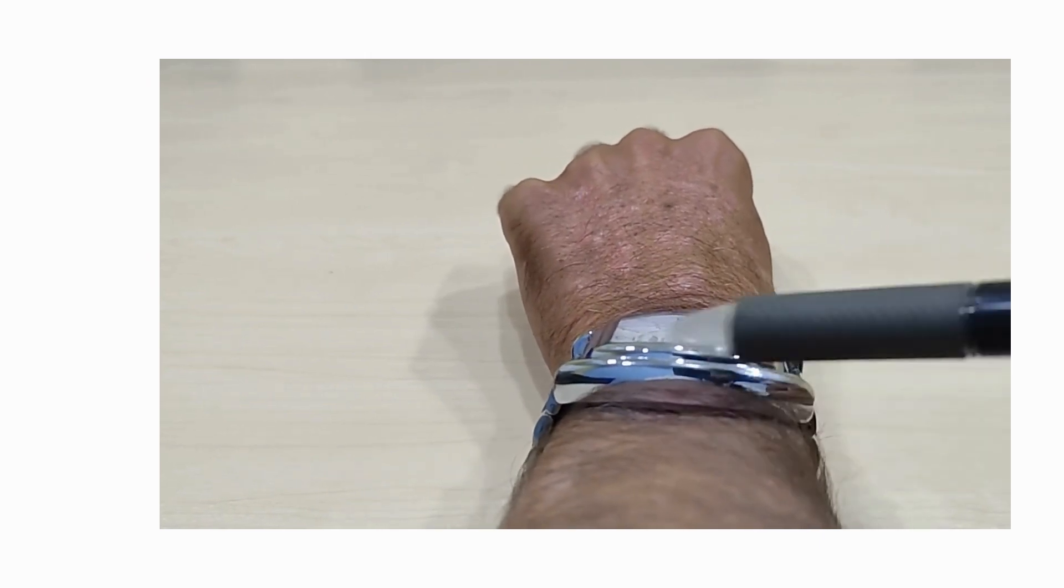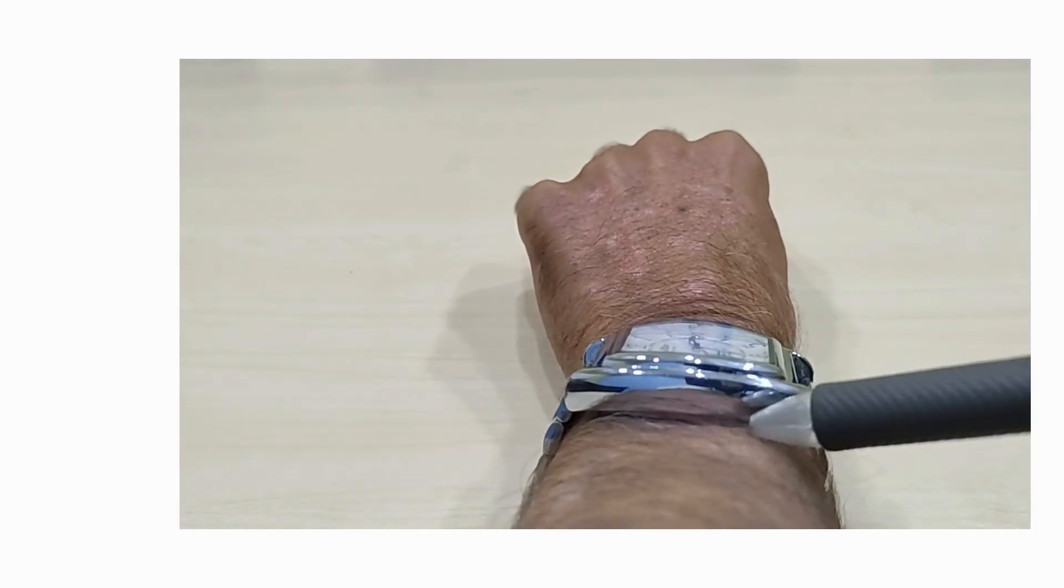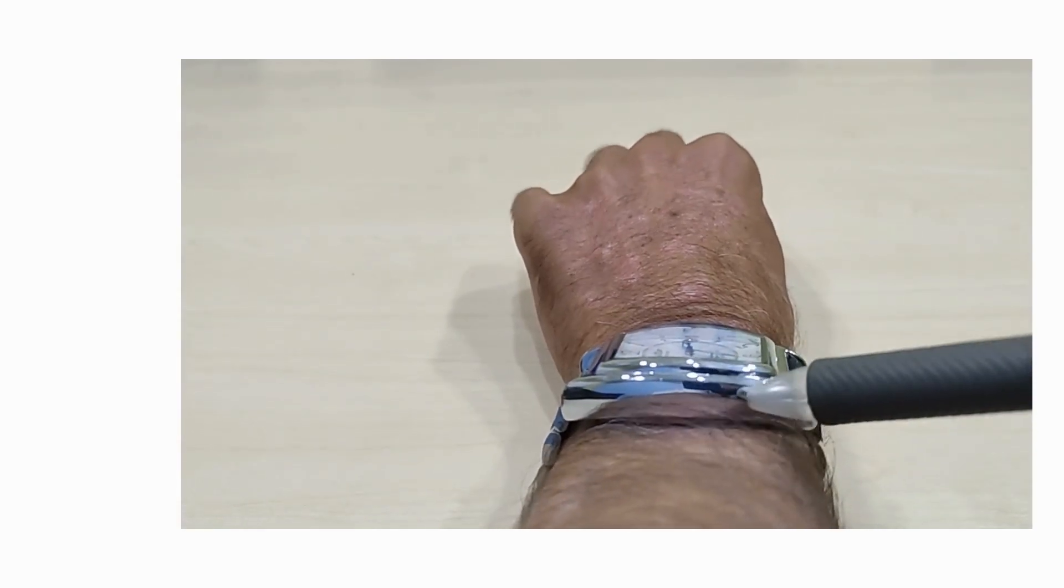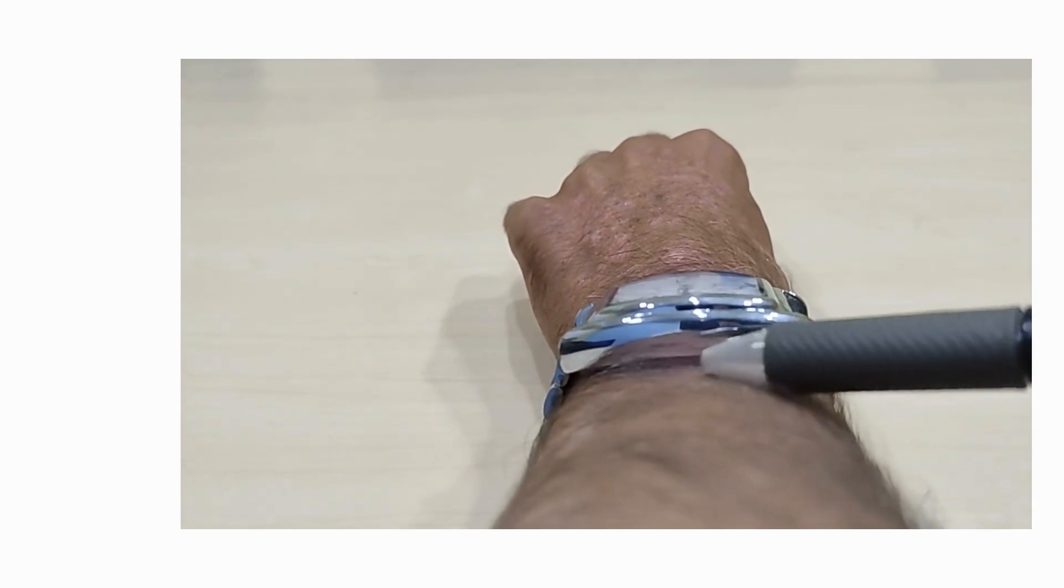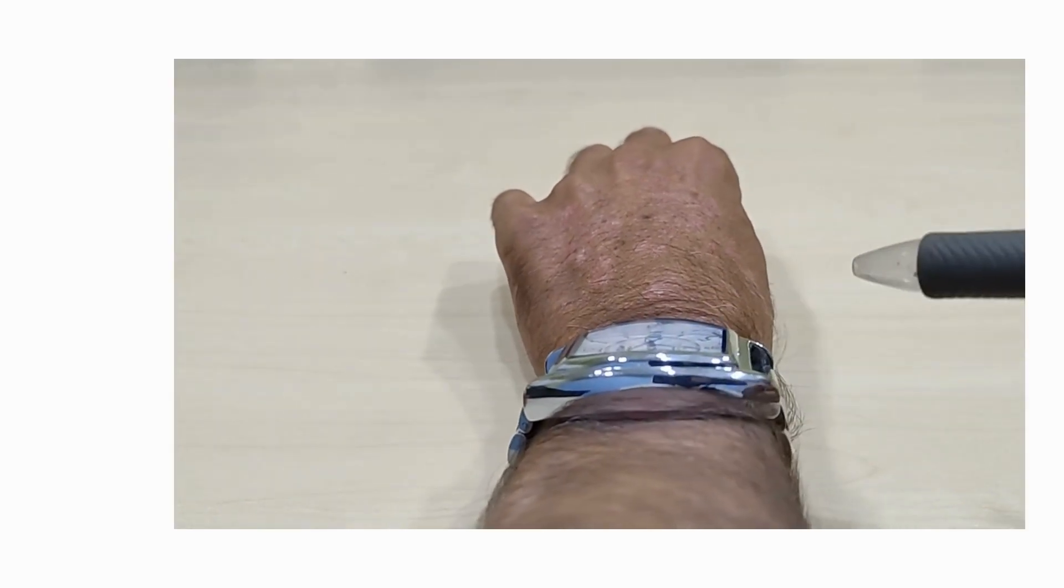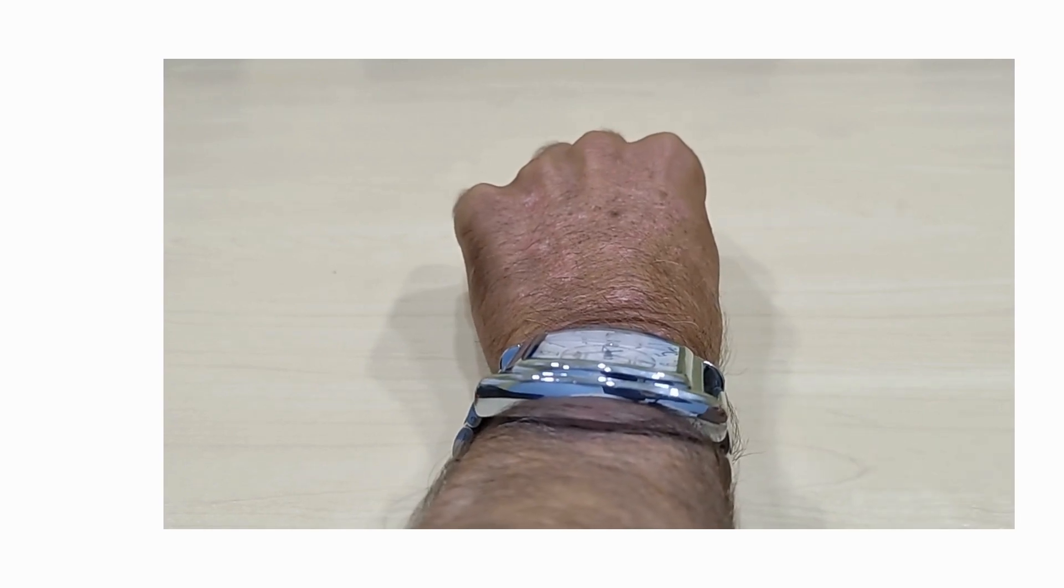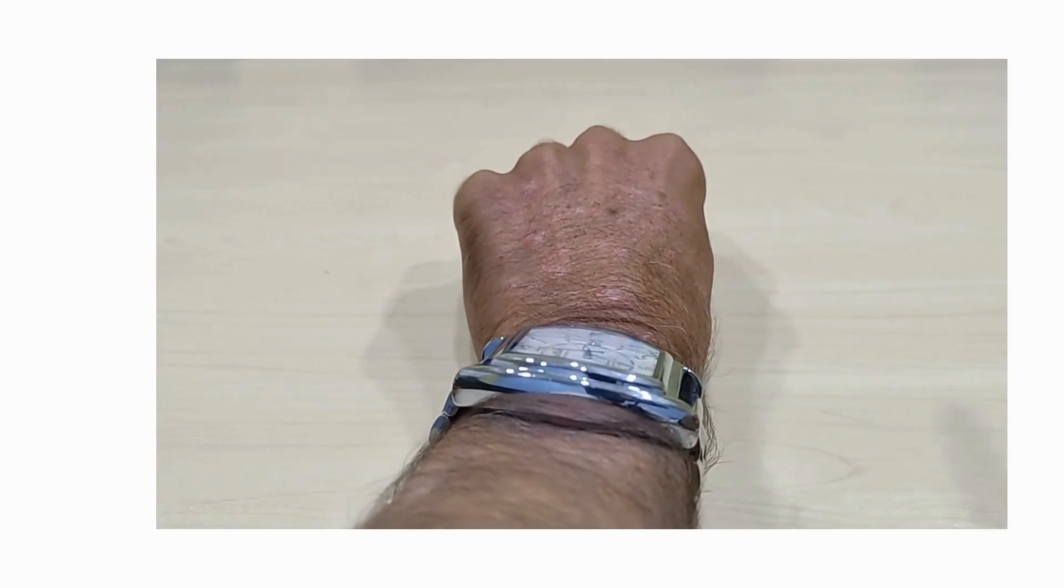For such a large lug to lug you don't get any overhang and there are no discernible gaps under those lugs. But what does it for me is that girth, the depth of the watch, 14 millimeters. It's just a bit too big I think to be called a classic looking barrel-shaped watch.